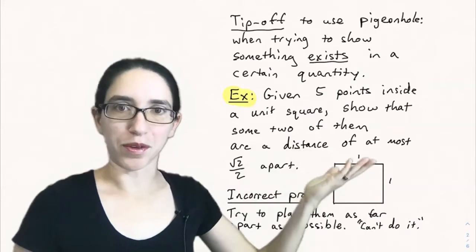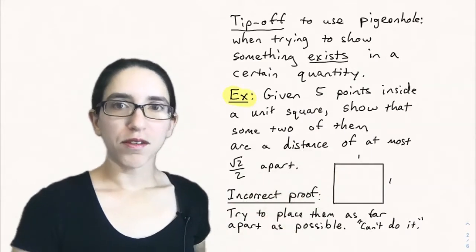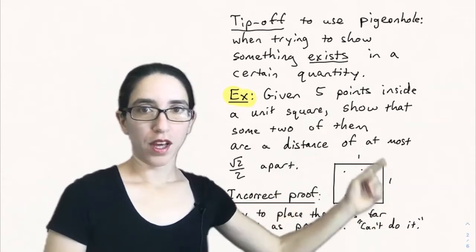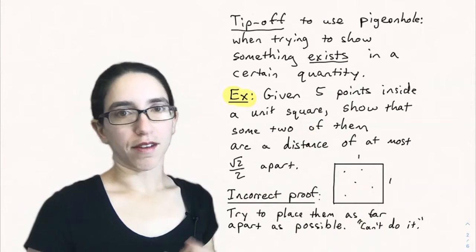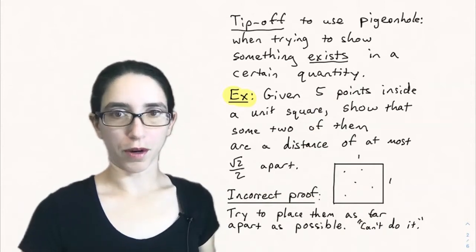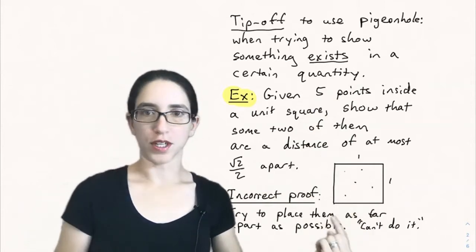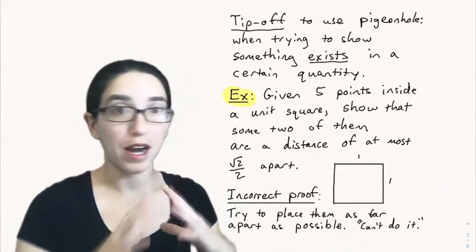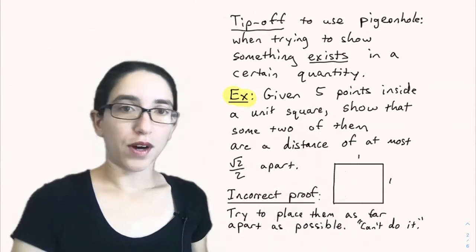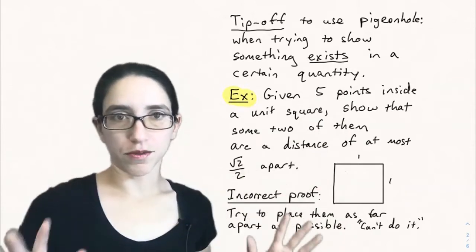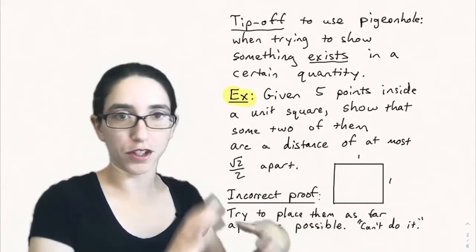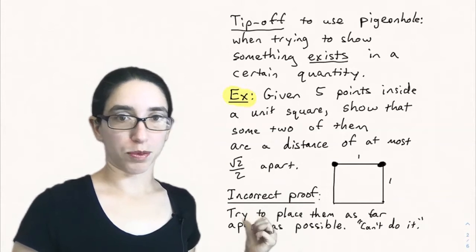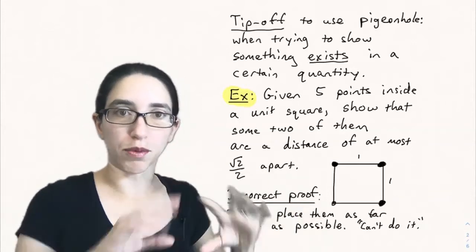Here's a geometric example. Given five points inside a unit square — a one by one square — show that some two of them are a distance of at most square root of two over two apart. We want to show this holds no matter how we draw the five points. Let me first go through a common mistake I've seen when students are first learning the pigeonhole principle.